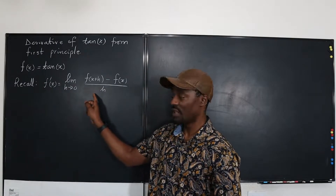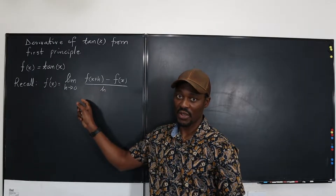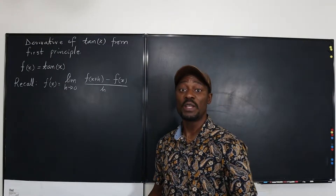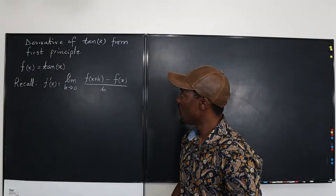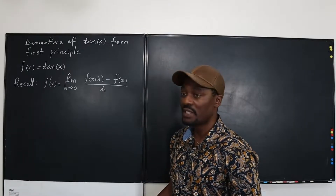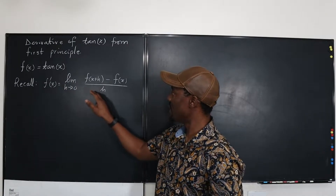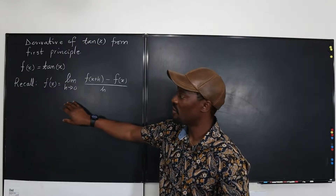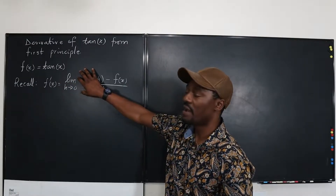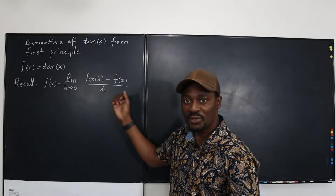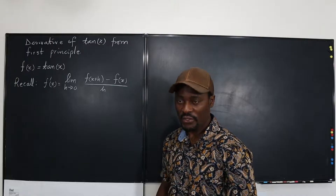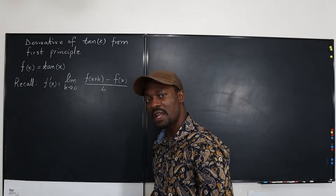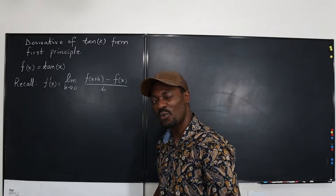We'll be using this definition, so let's quickly get into it. The derivative of a function is defined as the limit as h goes to zero of f(x+h) minus f(x) over h. Let's run through this proof — it's going to be a short one.